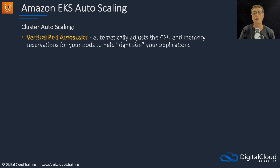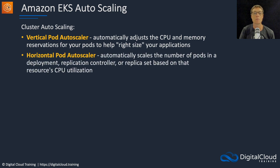There's a concept of auto scaling. You've got cluster auto scaling, which uses the vertical pod autoscaler — this automatically adjusts the CPU and memory reservations for your pods to right-size your applications. Then there's the horizontal pod autoscaler, which automatically scales the number of pods to ensure you have enough available to support your application.